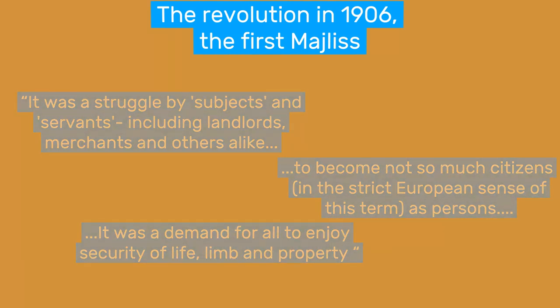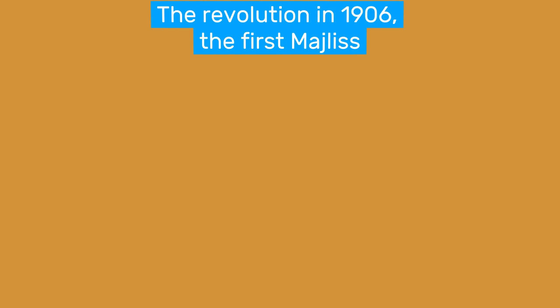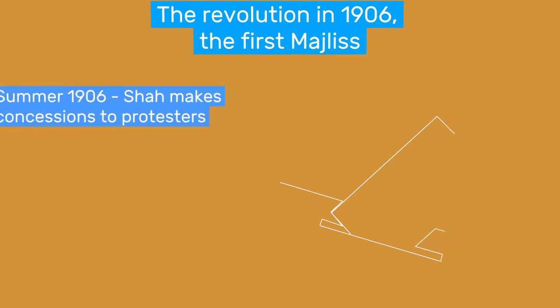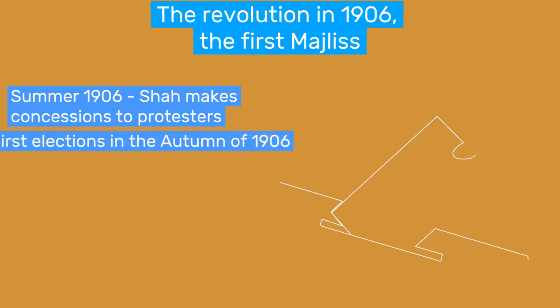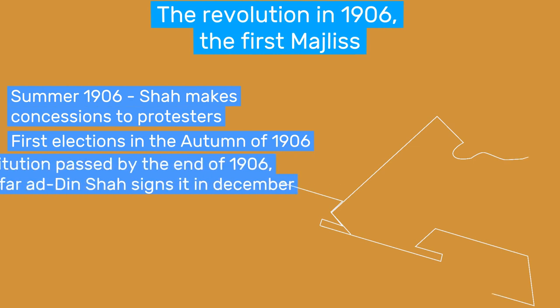Surprisingly, the frail Mozaffar ad-Din Shah, who was particularly ill at this time, eventually agreed to the protesters' demands in the same year. In 1906, a revolution occurred without any major bloodshed, though in the upcoming years much blood was spilled to maintain revolutionary gains. Mozaffar ad-Din Shah made concessions in the summer of 1906, establishing the parliament — the Majlis. Elections for the Majlis occurred in the autumn and went smoothly, and a constitution was passed by the Majlis by the end of the year.